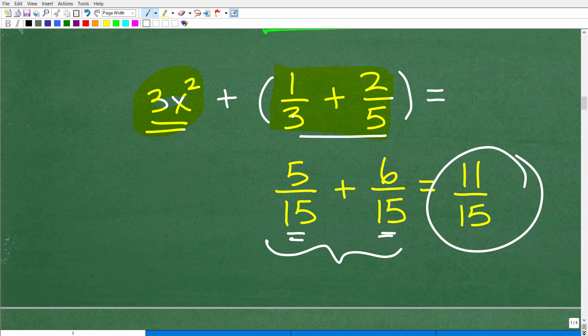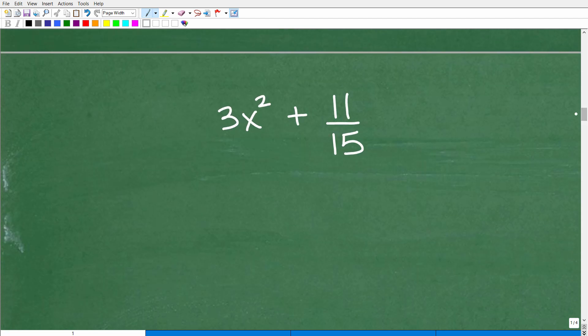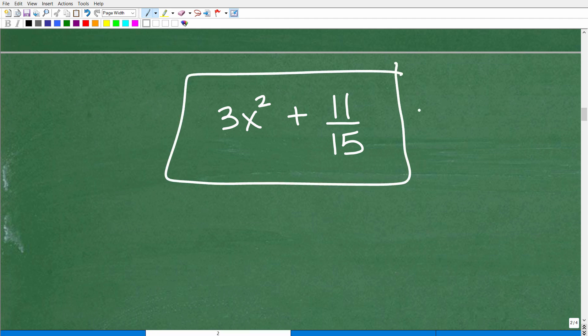Again, I'm not going to try to teach fractions in this video. But basically, when we add up these two fractions, 1 third and 2 fifths, the answer is 11 fifteenths. So now I can add that to my 3x squared and add that to 11 fifteenths, which is the sum of those two fractions. And you end up with this final answer.